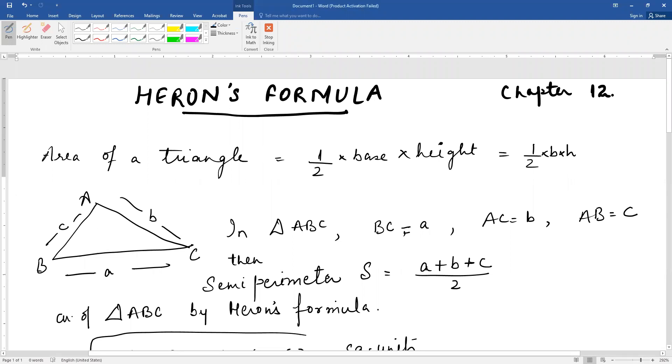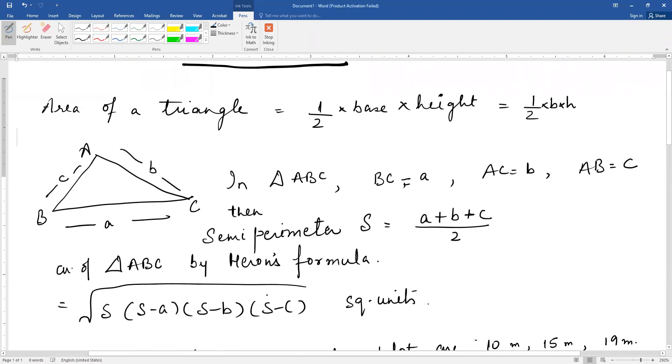He has given a formula for the area of the triangle when we don't know the height of the triangle, we only know the lengths of the sides. We call it Heron's formula. And this is given as under the root S into S minus A into S minus B into S minus C square units.